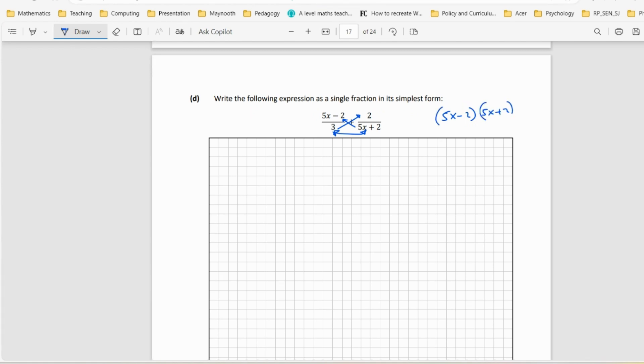That's going to give me 25x squared up here. The middle part will actually go away because it's a minus and a plus, so it's going to be minus 4. That's those two multiplied out. And then this is 3 times 2, which is 6, all over 3 times 5 is 15x, and 3 times 2 is plus 6.